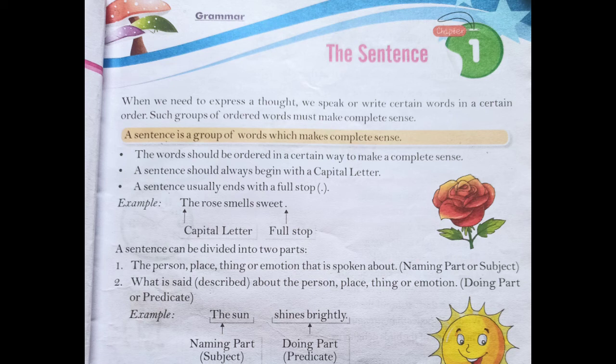Now let's see with an example: 'The sun shines brightly.' Here we are talking about the sun, so what is the subject? The sun is the subject, and 'shines brightly' is the predicate. So the naming part is 'the sun' and the doing part is 'shines brightly.'